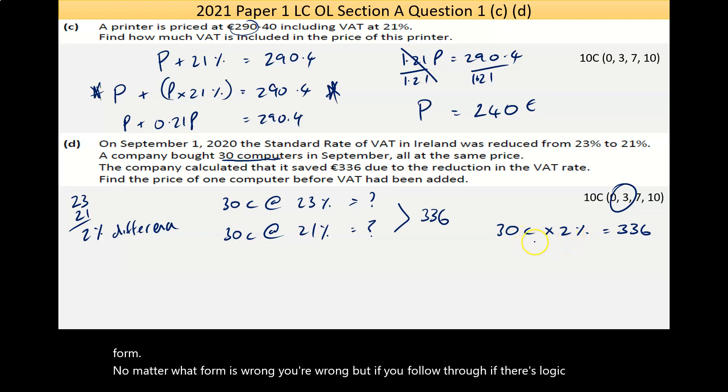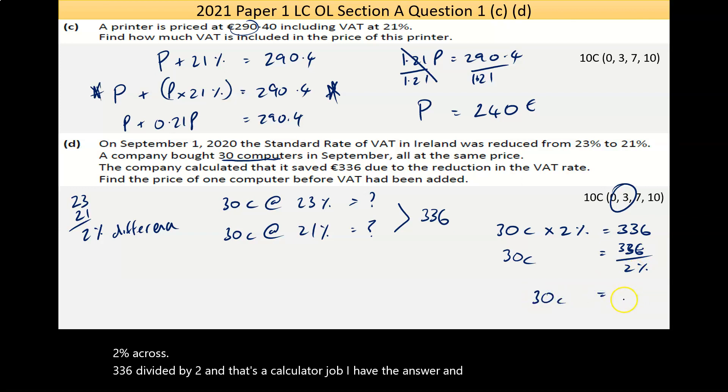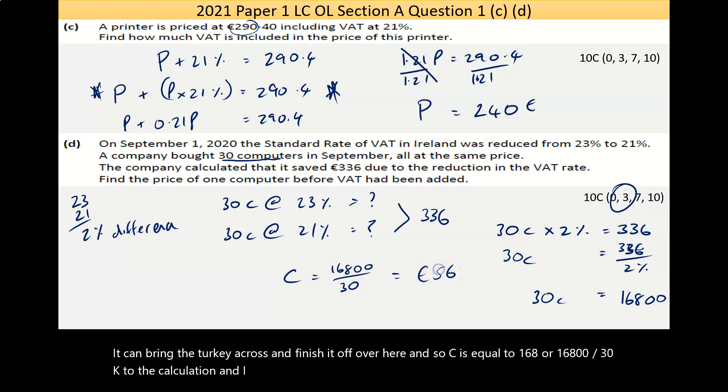If you can get that, the rest is easy - that's the trick. Trying to show that you can interpret the information being given, put it into a mathematical form. Now 30C by 2 percent, basically I can solve this. The 30C, I can move the 2 percent across. €336 divided by 2 percent - that's a calculator job. I have the answer and that one is €16,800. I could bring the 30 across and finish it off, so C equals €16,800 divided by 30, and I got €560. That's my answer.